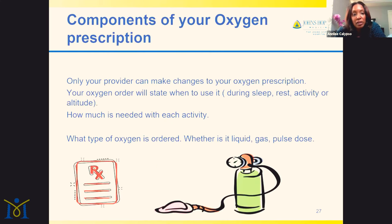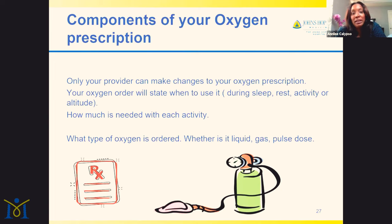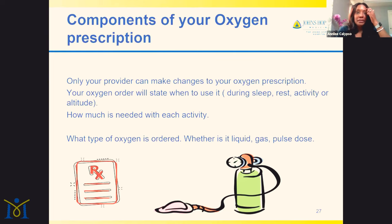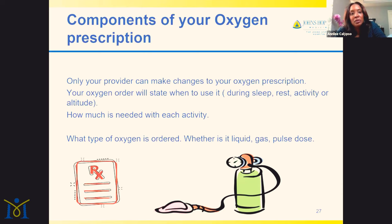Regarding the components of your oxygen prescription: once it's determined that you need oxygen, you should have a frank discussion with your provider about your needs, your activity level, and what you hope to be able to do while wearing oxygen. Your provider will determine whether you need oxygen at sleep, rest, activities, or altitude, and how much is needed. If you travel a lot or spend time outdoors, this is when you have that conversation.